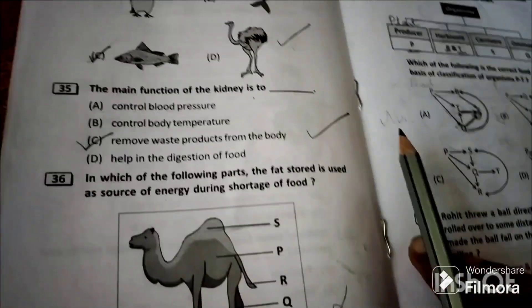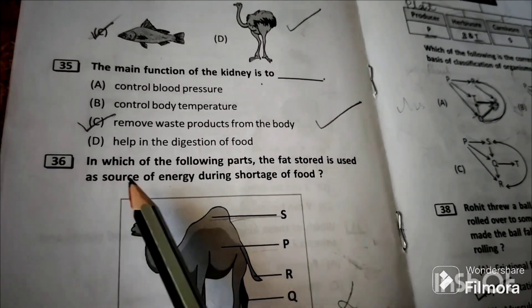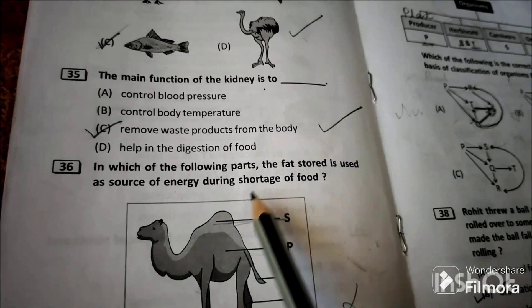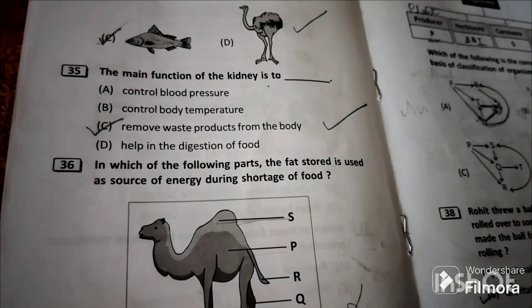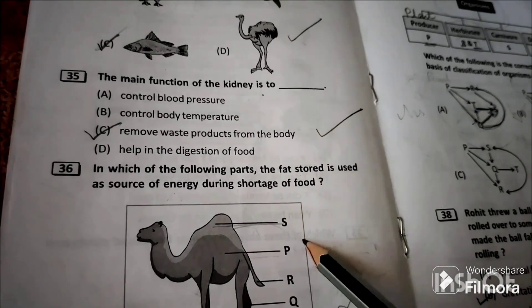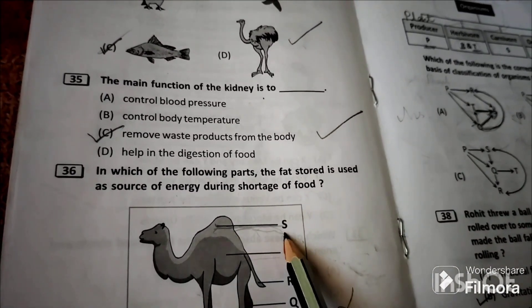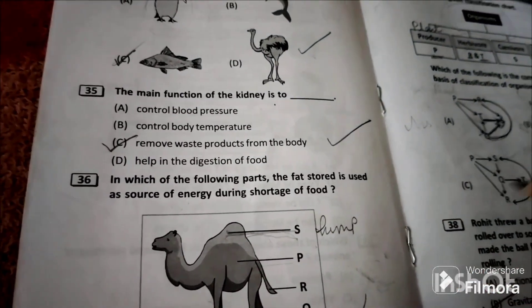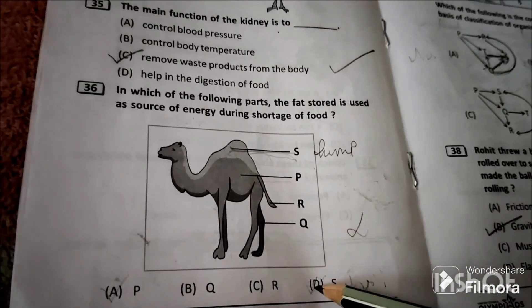Question 36: In which of the following parts is the fat stored and used as source of energy during shortage of food? Since camel is a desert animal, it stores water in its hump. Part S is hump, so it stores food in part S.